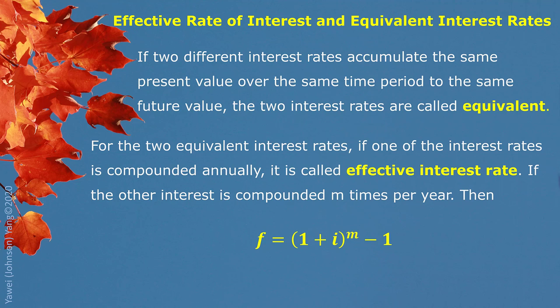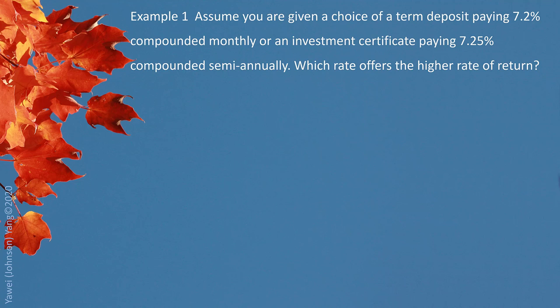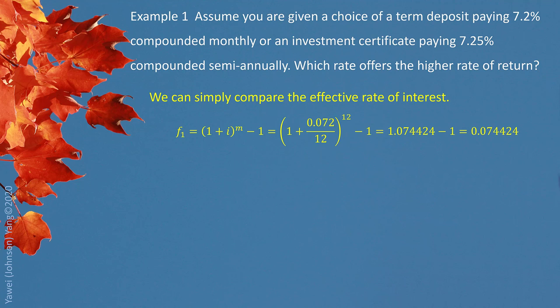We are going to use this idea to practice some examples. Example 1: Assume you are given a choice of a term deposit paying 7.2% compounded monthly, or an investment certificate paying 7.25% compounded semiannually. Which rate offers the higher rate of return? We can simply compare the effective rate of interest, since effective interest rate is compounded annually. For each interest rate situation, we switch them to the corresponding effective interest rate.